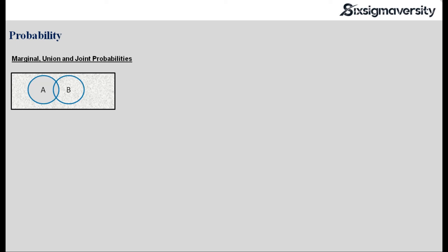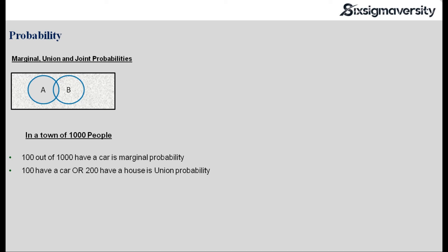What are marginal, union, and joint probabilities? Let's take another example. In a town, we have a group of people who own a car and a group of people who own a house. If I look at the car first — 100 out of 1000 have a car — when I look at that probability, that's called a marginal probability. If 100 have a car or 200 have a house, that is a union probability. And 100 have both a house and a car — that is called joint probability, your intersection. Union probability is 100 or 200, A and B put together. 100 out of 1000 is marginal probability — just A having a probability in the entire town.